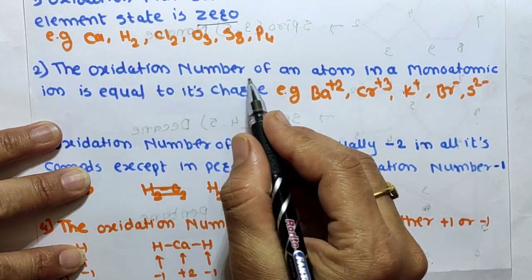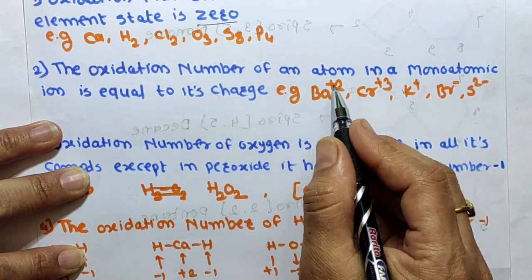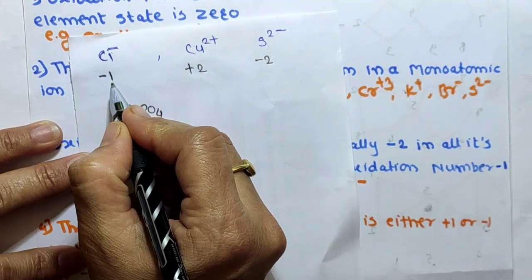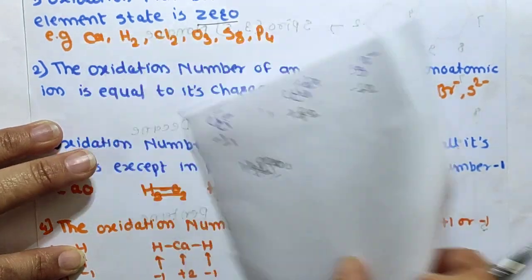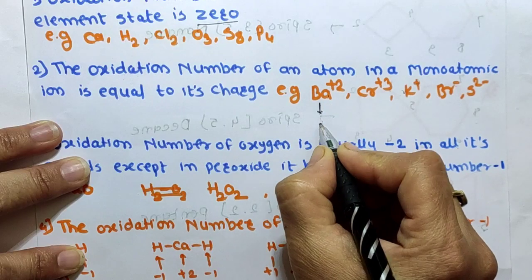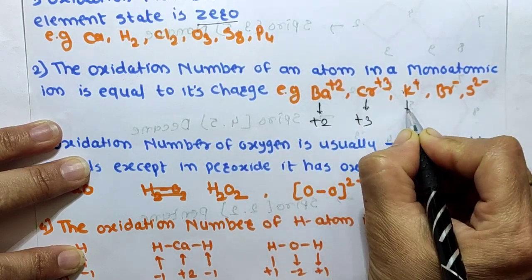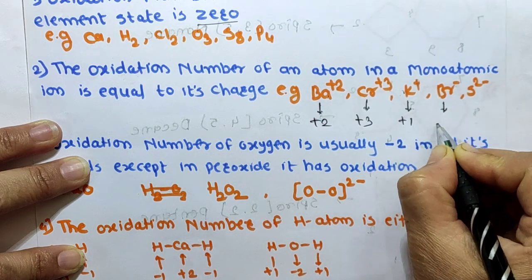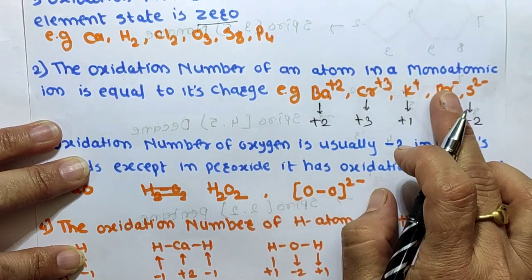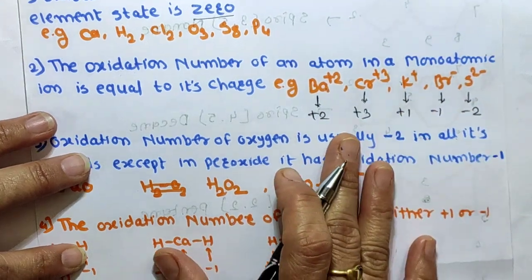Rule 2: The oxidation number of an atom in a monoatomic ion is equal to its charge. For example, Cl⁻ has oxidation number -1 because it is a monoatomic ion. Barium has oxidation number +2, chromium +3, then +1, -1, and -2 for others. Whatever charge the atom carries, that is its oxidation number.